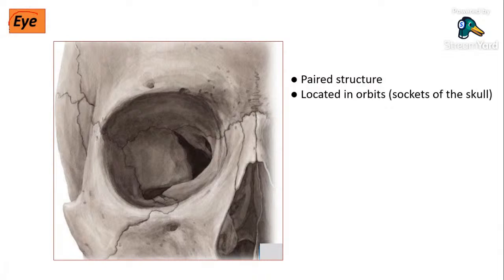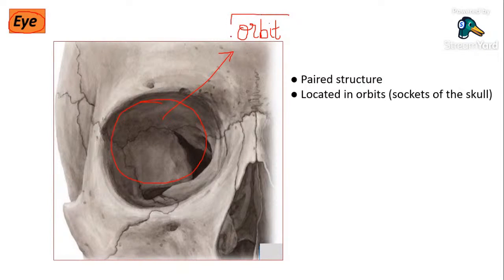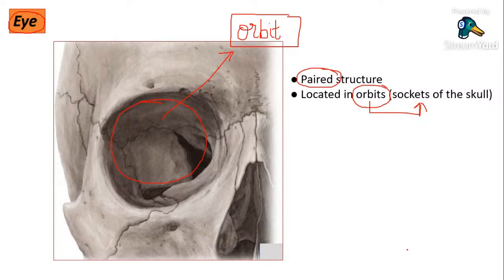Moving on to the main topic: the human eye. Eyes are actually paired structures located in the socket of the skull, which is known as the orbits. So eyes are paired structures located in the orbits, which are the sockets of the skull.